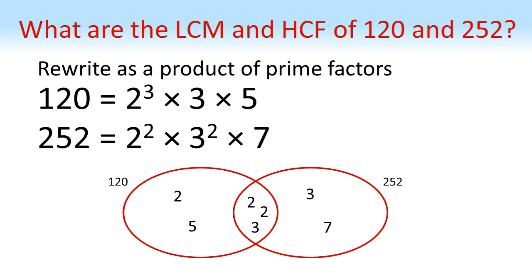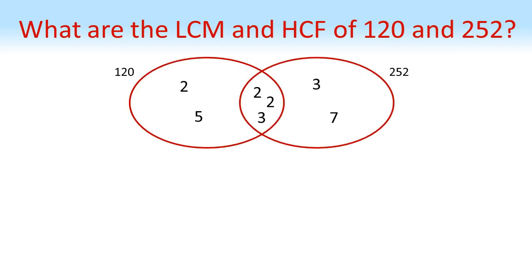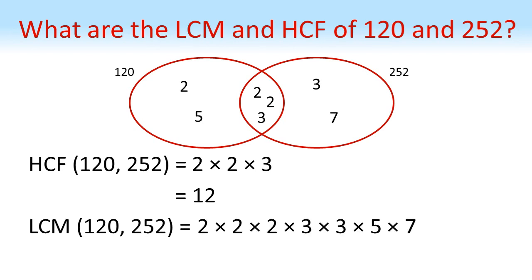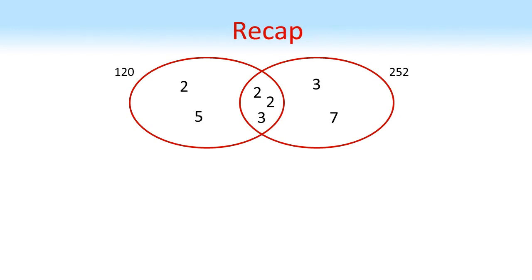To find the highest common factor, we take the product of the shared factors in the middle: 2, 2, and 3, which gives a highest common factor of 12. For the lowest common multiple, we multiply all factors in the Venn diagram: all three 2's, both 3's, the 5 and the 7, giving a lowest common multiple of 2520.